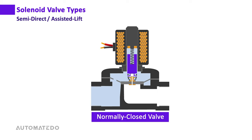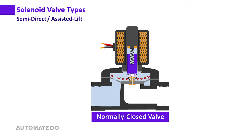In a normally closed semi-direct acting valve, two chambers are separated by the diaphragm. A tiny hole connects the chambers, equalizing pressure in both. The media in the upper chamber contacts a larger diaphragm area than the media at the inlet, so the diaphragm is forced down toward the valve seat and the valve closes.